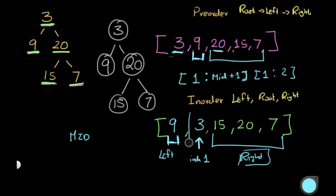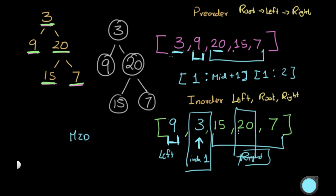This is how we recursively build the tree, each time working with a smaller portion of the lists. The first mid value was at index 1 (value 3). When we move to the right subtree, the new mid will be at index 3 (value 20), and we repeat the same steps recursively.